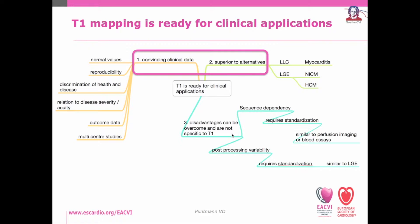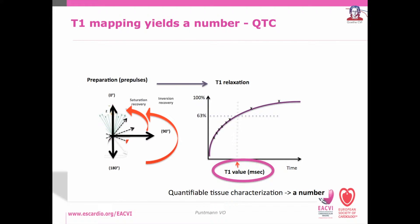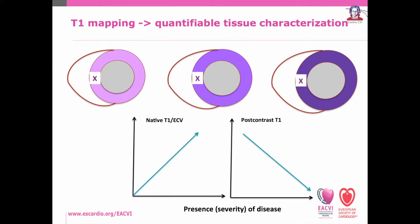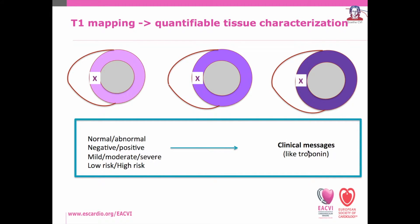T1 mapping is quantifiable tissue characterization. This means it yields a number, which is derived by registration of recovery of longitudinal magnetization. T1 values relate to the intrinsic tissue properties, including the presence and severity of disease, and give clinical messages just like any other quantitative diagnostic test — for instance, troponin — whether the values are normal or abnormal, whether the test is negative or positive for a certain condition, whether the disease is mild, moderate, or severe, or whether the patients are at low or high risk of an adverse outcome.